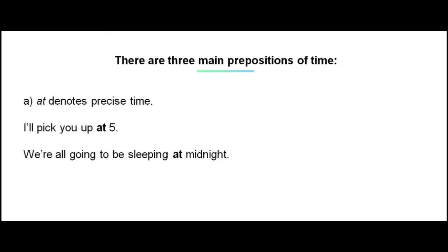Now there are three main prepositions of time. The first is 'at.' At denotes precise time. Look at the examples below: I'll pick you up at 5. The preposition 'at' in this sentence denotes a precise time — 5. And in this sentence: We're all going to be sleeping at midnight. Again, the preposition of time 'at' denotes a precise time, which in this sentence is midnight.